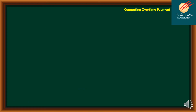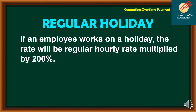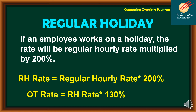Let's move on to the fourth type of overtime payment: regular holiday. Most employees look forward to this type because they refer to it as double pay. If an employee works on a regular holiday, the rate will be the regular hourly rate multiplied by 200%. So: regular holiday rate = regular hourly rate × 200%, and OT rate = regular holiday rate × 130%.